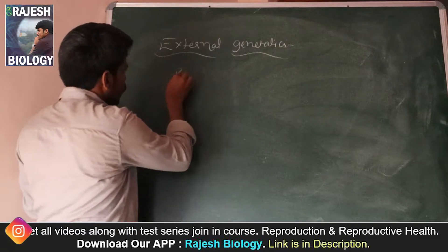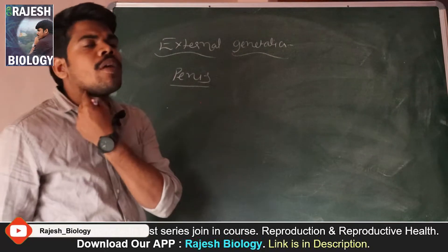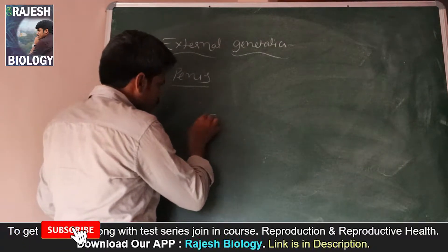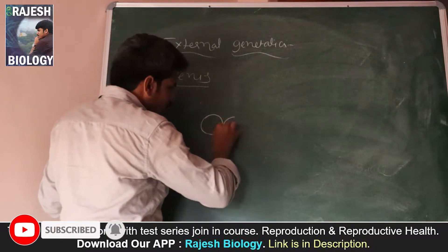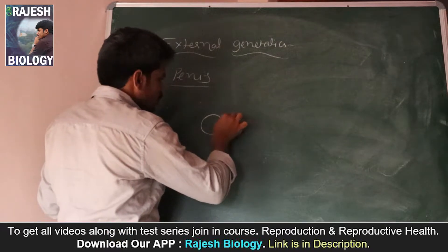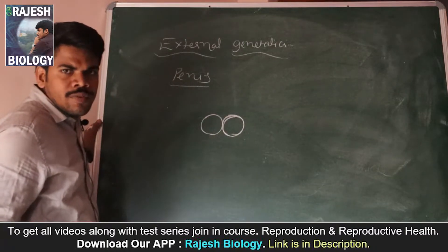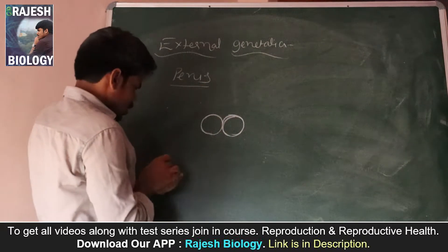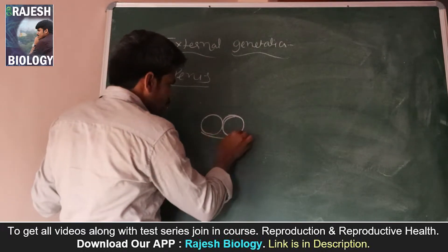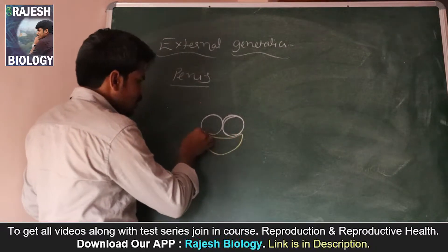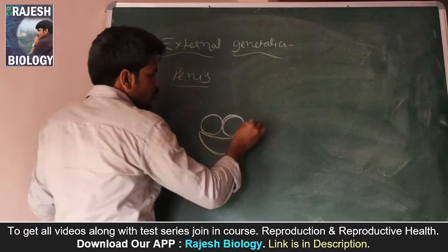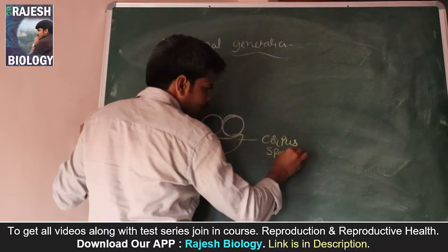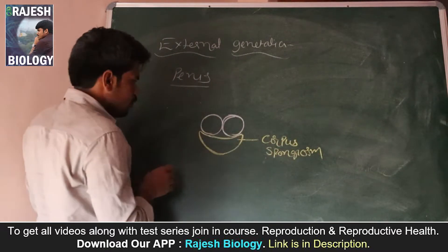The penis is made by three specialized connective tissues. Two upper tissues are called corpora cavernosa, which are present on the dorsal aspect of the penis — two columns of corpora cavernosa. And one lower tissue is the corpus spongiosum. Corpus means tissue, so corpus spongiosum is a spongy tissue.